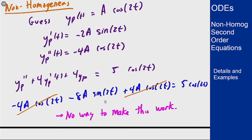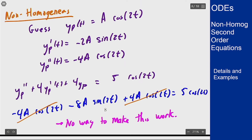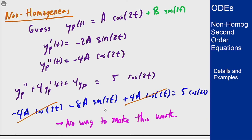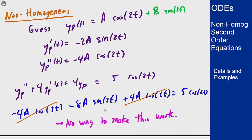We think back to why exponentials worked so nicely — every derivative was still an exponential of the same argument. But for cosine, differentiating gives sine and vice versa. So we must include both the cosine and the sine term with the same argument in our guess. We need to add a second term b sin(2t), which allows us to balance the sine and cosine terms when we substitute.